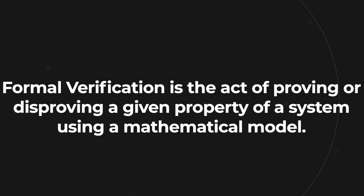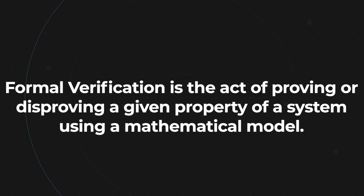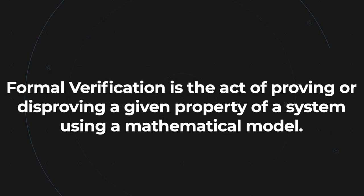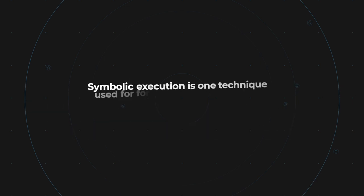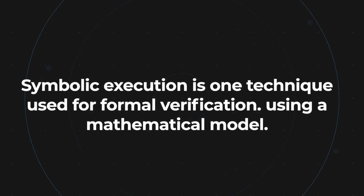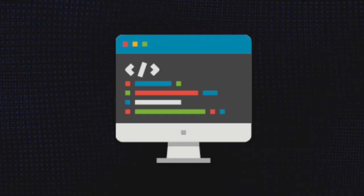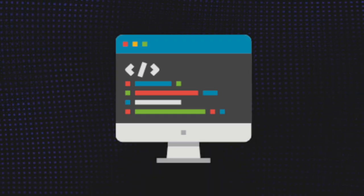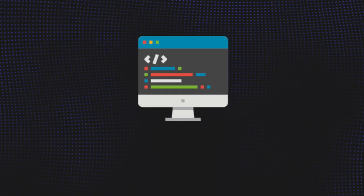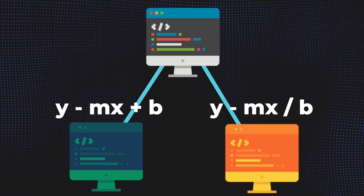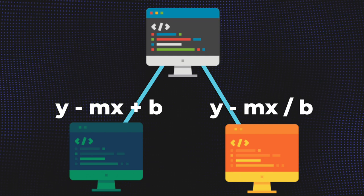Formal verification is the act of proving or disproving a given property of a system using a mathematical model. Symbolic execution is one technique used for formal verification. Symbolic execution explores different paths in a program, creating a mathematical representation for each path.